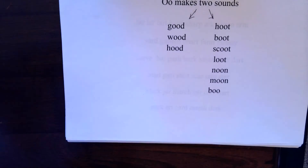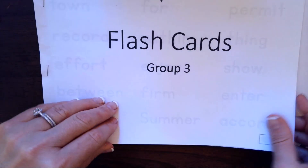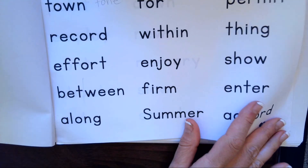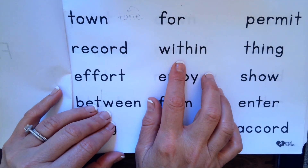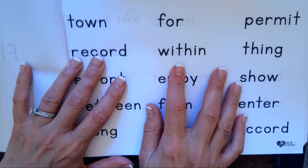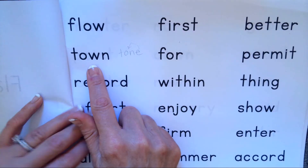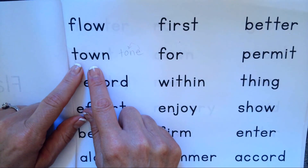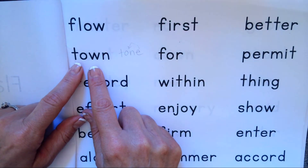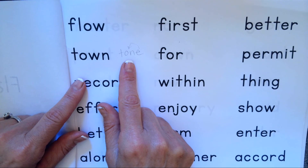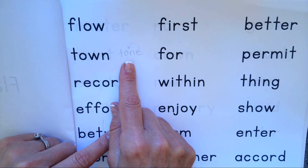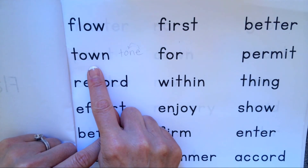Okay, so the next set are a little trickier blends. T-H makes th, W-I-T-H-I-N, within. O-W makes o or ow, I'm going to try it both ways: town or tone. It's town. It could be tone, except we're going to learn that the word tone is spelled differently, so we know this one is an ow sound.